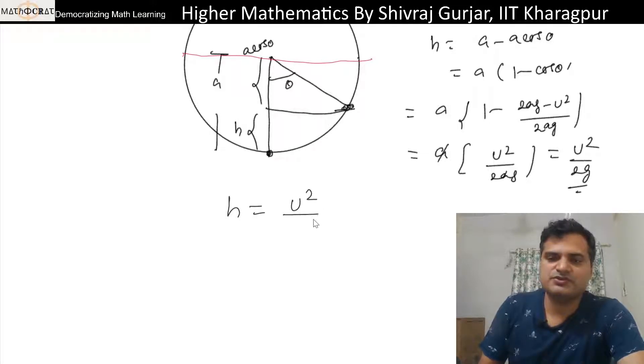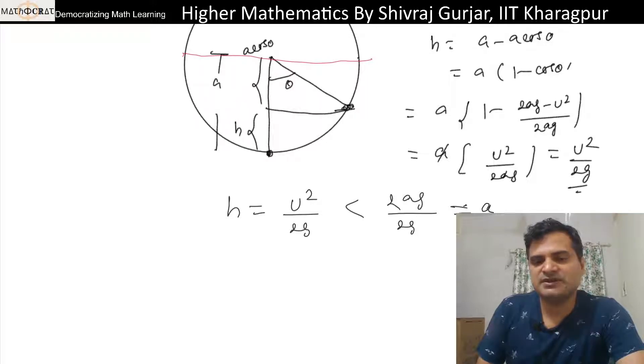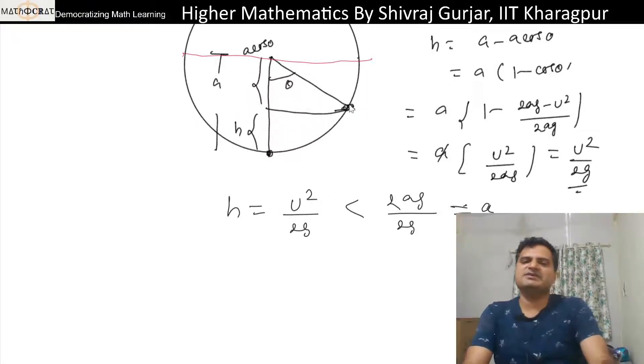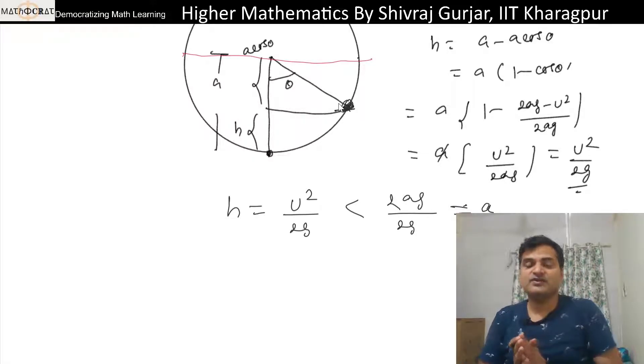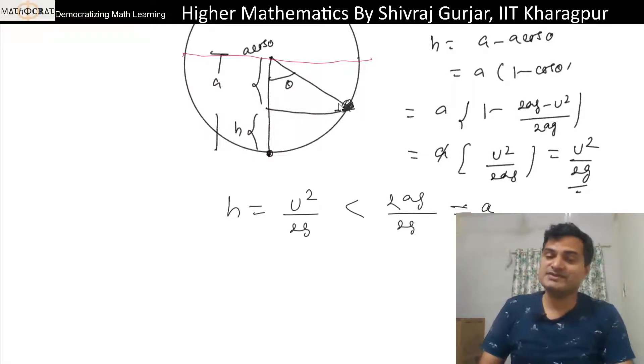Particle, this h equals to u²/(2ag), but u is less than √(2ag), so divided by 2ag, so this is of course less than a. So h will be less than a means somewhere here. The case when velocity becomes zero but tension is not zero.